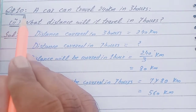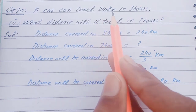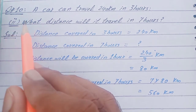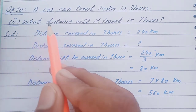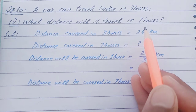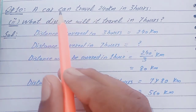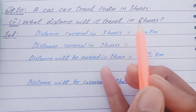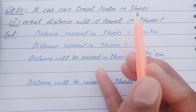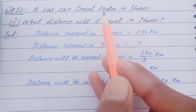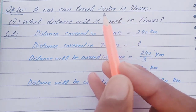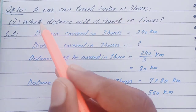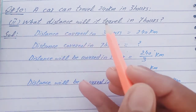Now question number 10 is written as: a car can travel 240 kilometers in three hours. We are doing the second part of question 10, which asks: what distance will it cover in seven hours? So the car travels 240 kilometers in three hours — what distance will be covered in seven hours? The time is given in one part and the distance in the other, so we will find the distance.